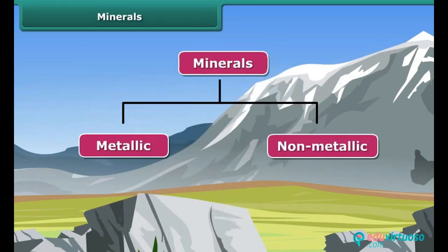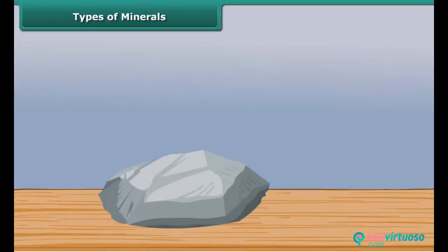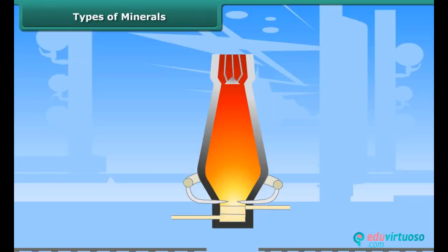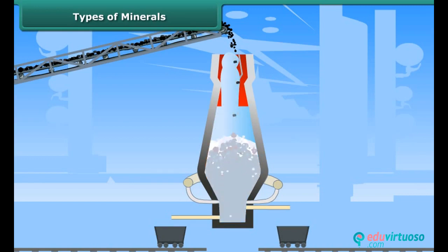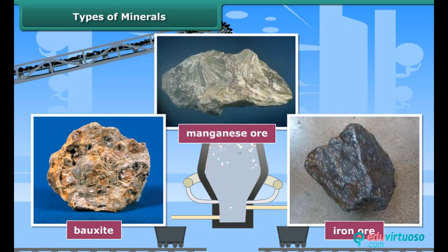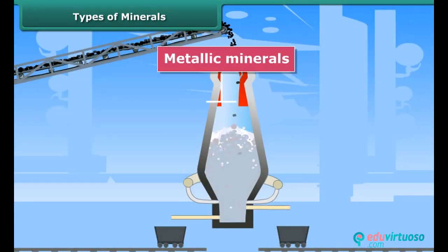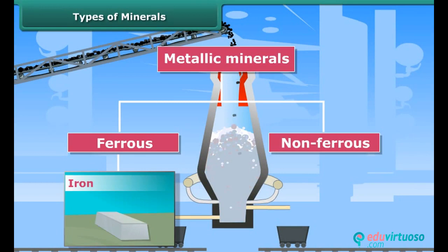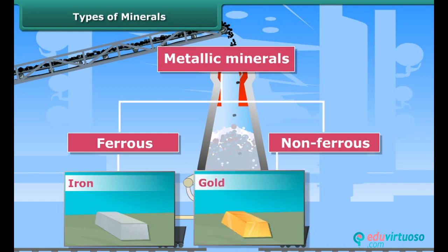Metallic minerals contain metal in raw form. Metals are substances that conduct heat and electricity and have a characteristic luster or shine. Metallic minerals may be ferrous or non-ferrous. Ferrous minerals contain iron, while non-ferrous minerals do not contain iron but may contain other metals such as gold or copper. Non-metallic minerals do not contain metals at all.